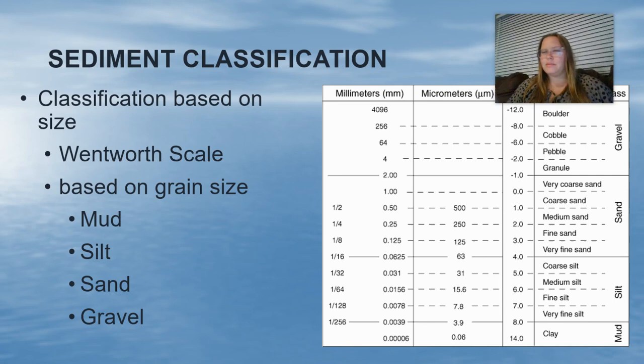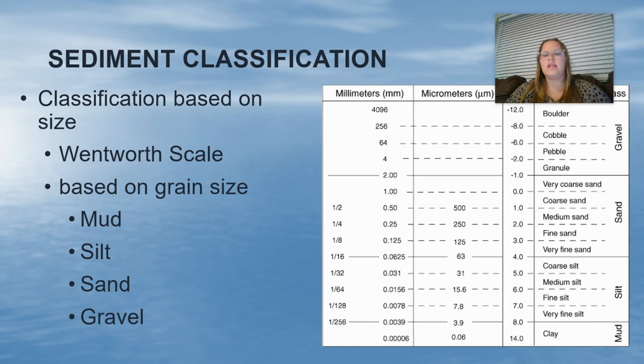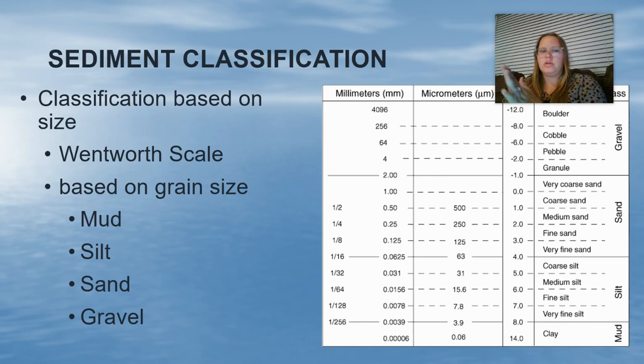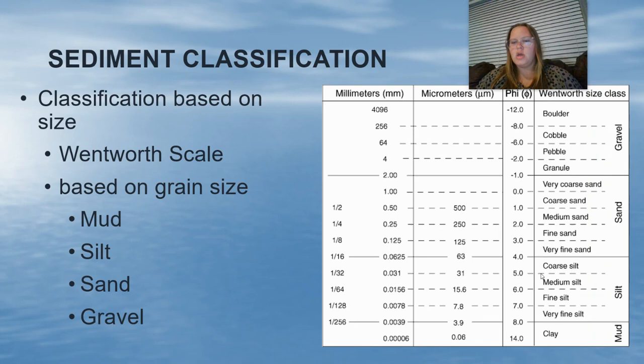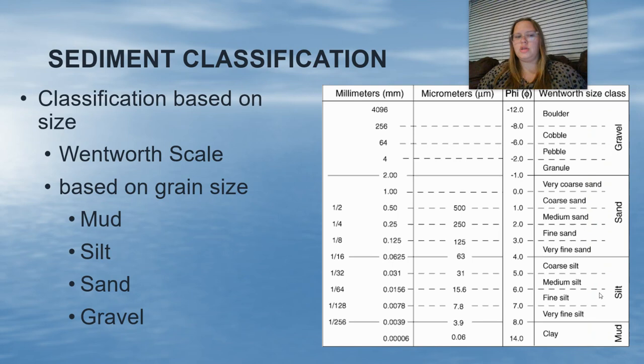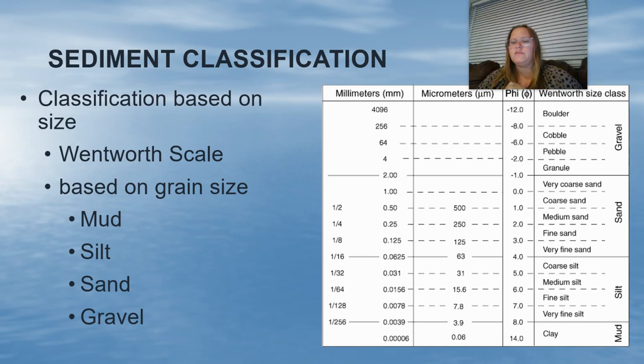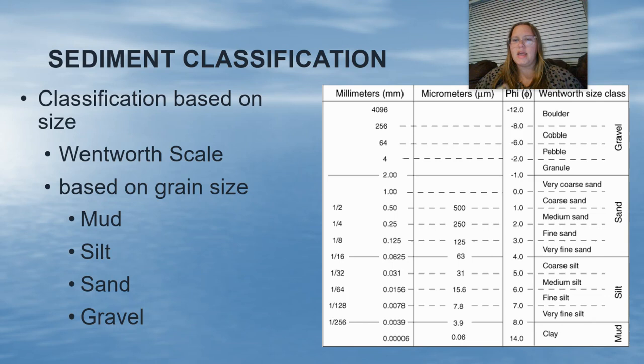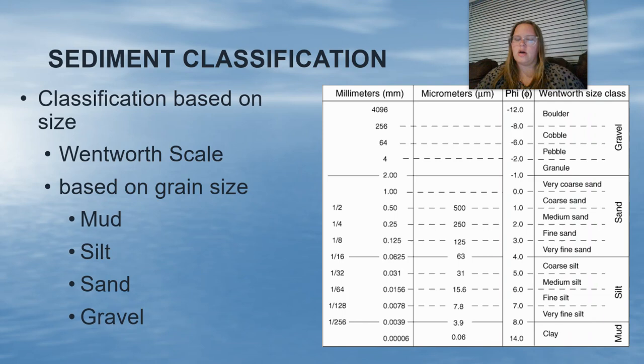Let's talk about sediment classification. Classification of sediment is based off of two things: first is size, second is origin. The scale we use to measure size of sediment is the Wentworth scale, based on grain size. The big four that we use are mud, silt, sand, and gravel. Mud and clay are super fine, very small particles, and gravel includes our bigger particles like cobble and boulder.